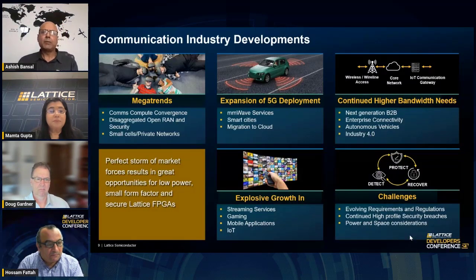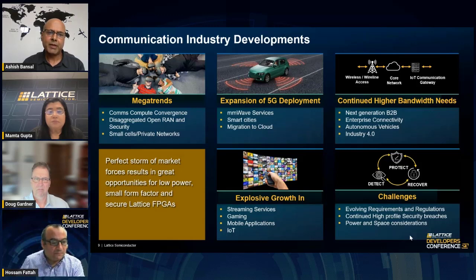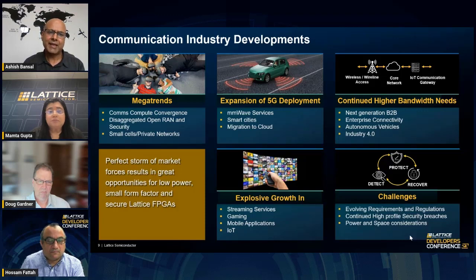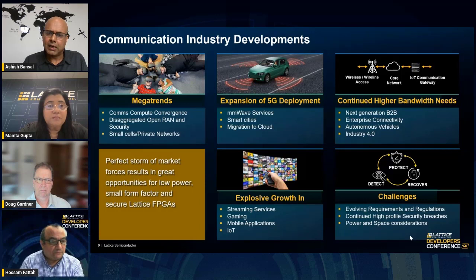We are seeing comms compute convergence, where communication workloads and wireless protocol network functions are now implemented on white box, general purpose hardware — similar to how IT workloads had been implemented earlier. This is one of the biggest mega trends along with the disaggregation of open RAN, which introduces security as one of the main critical things. Another mega trend is small cells and the advent of private networks.